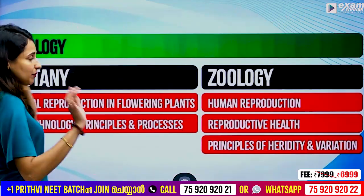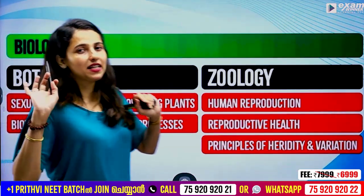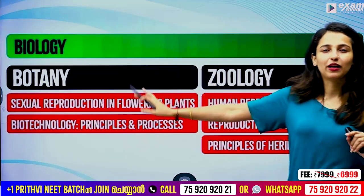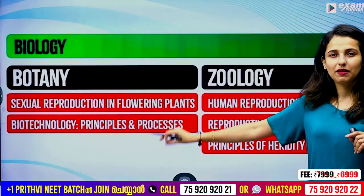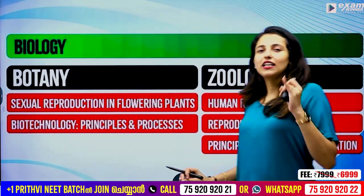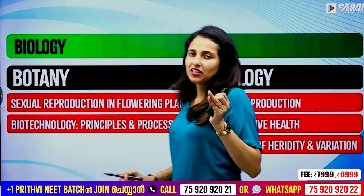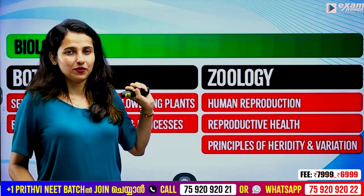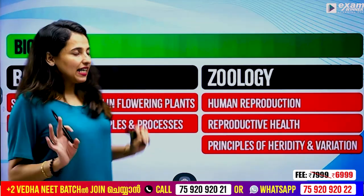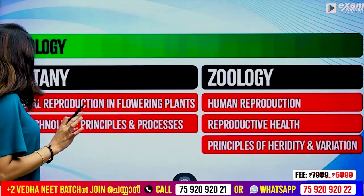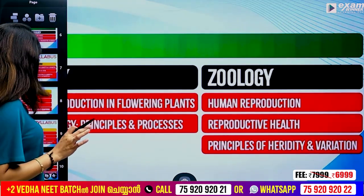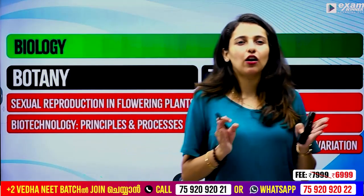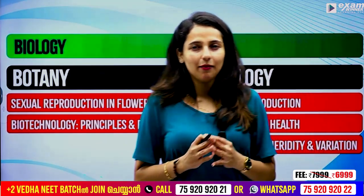In biology, we have five chapters. In botany: sexual reproduction in flowering plants and biotechnology principles. In zoology: human reproduction, reproductive health, and principles of inheritance and variation. These chapters do not apply to the pre-JEE exam. You already have a pre-NEET exam — now we have to learn this.